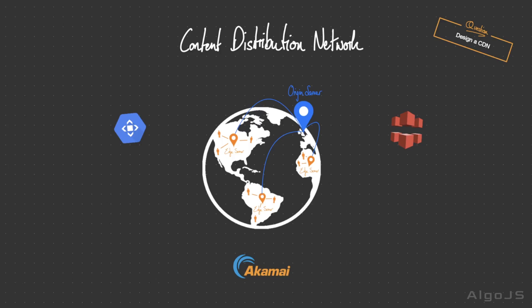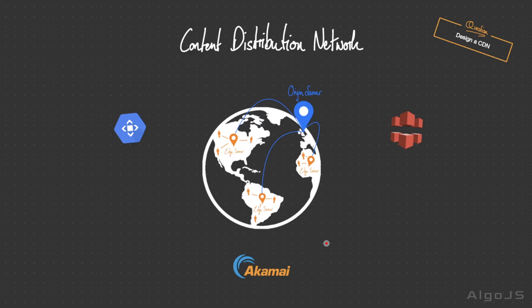When building large-scale distributed systems, there is an inherent problem. If we have users spanning continents with a single server serving these users, they're going to have to make cross-continental requests through multiple internet service providers and internet exchange points to retrieve data. This adds a non-trivial amount of latency, impeding the user experience — especially in data-intensive applications like streaming platforms that stream large video files to end users.